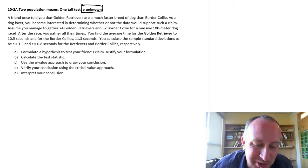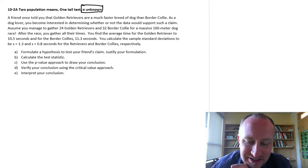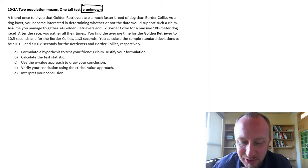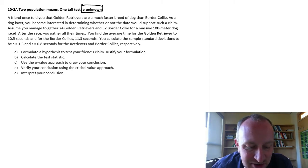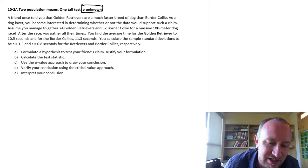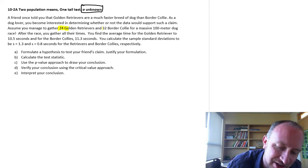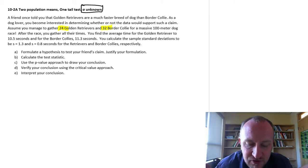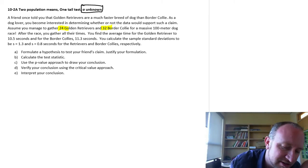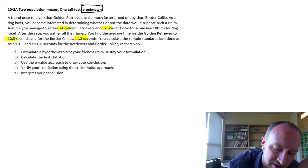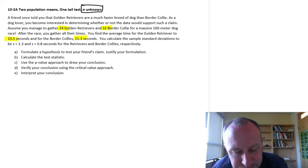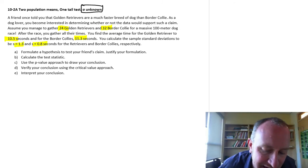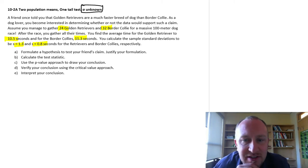A friend once told you that golden retrievers are a much faster breed of dog than border collies. As a dog lover you become interested in determining whether or not the data would support such a claim. Assume you manage to gather 24 golden retrievers and 32 border collies for a hundred meter dog race. After the race you gather all the times. You'll find the average time for the golden retriever is 10.5 seconds and for the border collies 11.3 seconds.